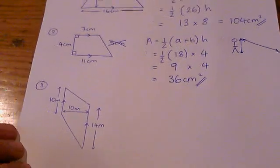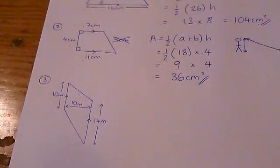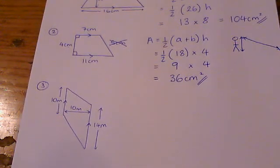Last up, number 3. This is a trapezium. It's been drawn perhaps what you might consider sort of the wrong way round.